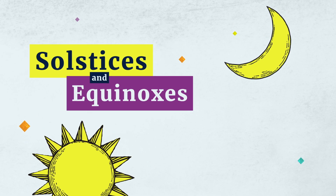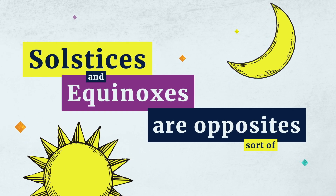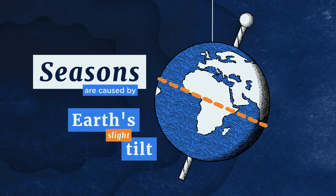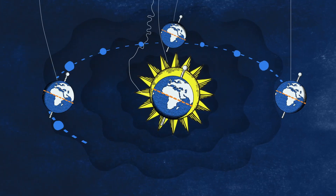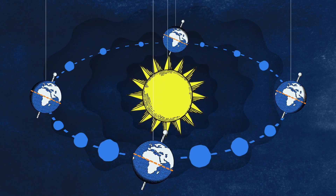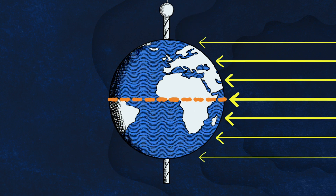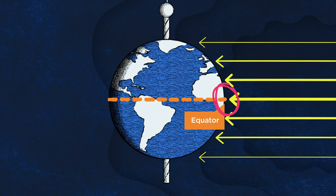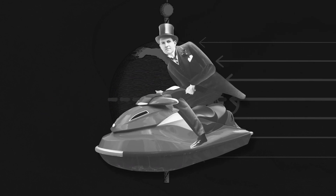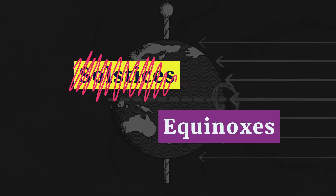As it turns out, solstices and equinoxes are sort of opposites. We know that seasons are caused by Earth having a slight tilt on its axis. As Earth wobbles around the Sun, different points of the Earth receive more or less sunlight throughout the year. If Earth wasn't tilted, the Sun would just shine directly on the equator all year long, leaving us without seasons — and without solstices or equinoxes.